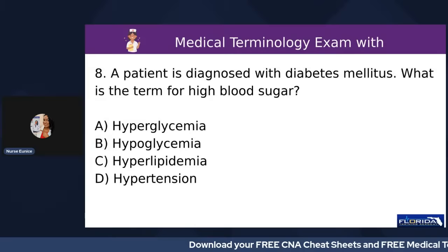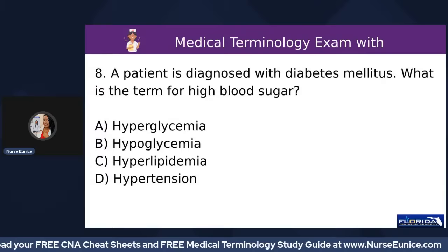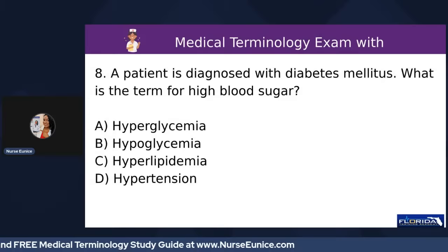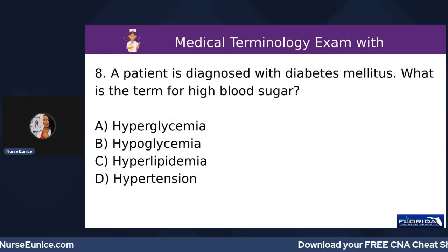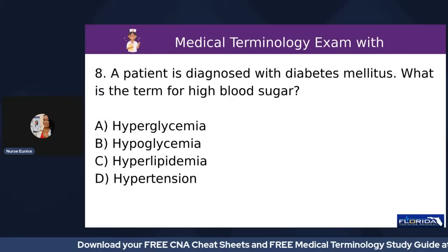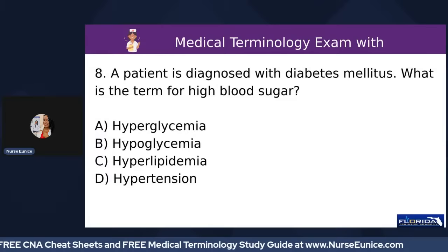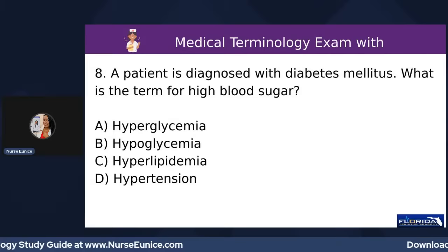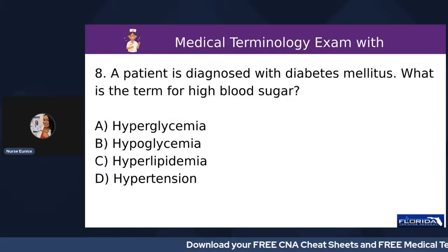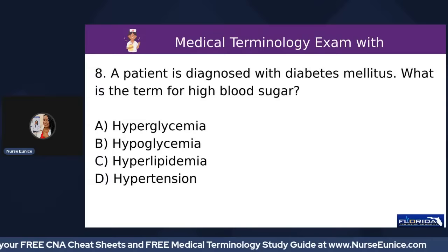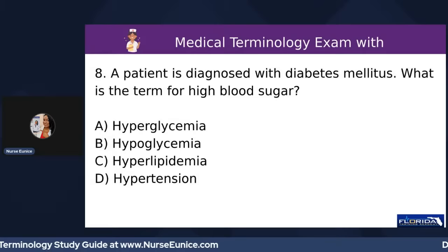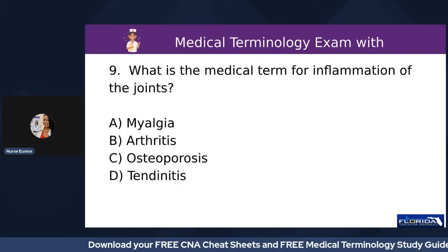Number eight: a patient is diagnosed with diabetes mellitus — what is the term for high blood sugar? A) hyperglycemia, B) hypoglycemia, C) hyperlipidemia, or D) hypertension. 'Hyper' refers to elevation or something increased, and 'glycemia' refers to sugar within the bloodstream. 'Lipidemia' refers to lipids or cholesterol. 'Hypo' means low, so it wouldn't be B. The correct answer is A, hyperglycemia.